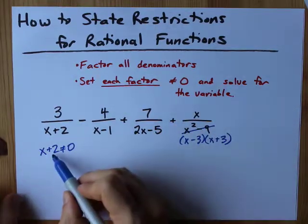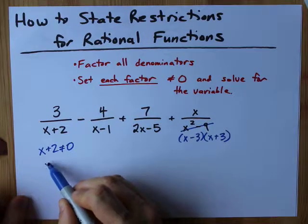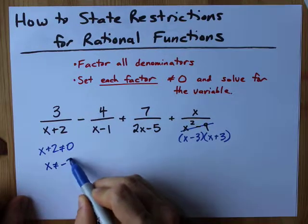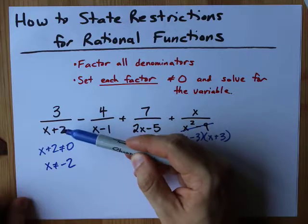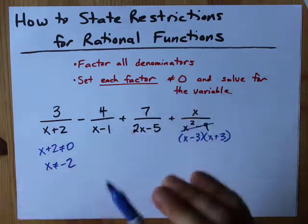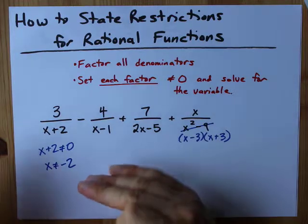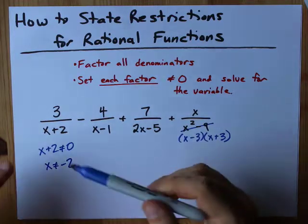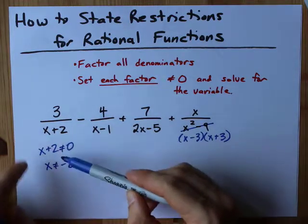What do you do with this? You move the two to the other side so you get x not equal to negative two. If you note that there's a shortcut from here to there I almost guarantee you're going to be allowed to use that. But officially the reason this shortcut works is that you can't let the denominator be zero.